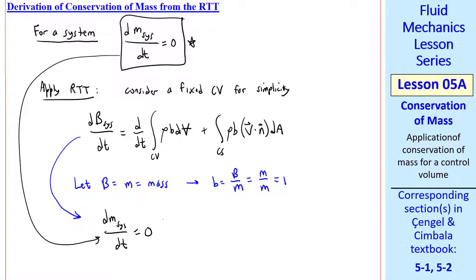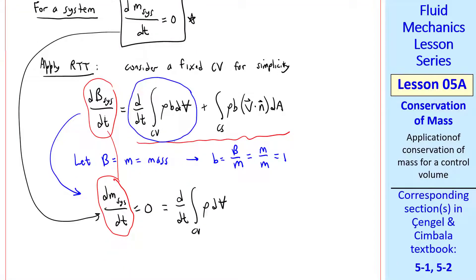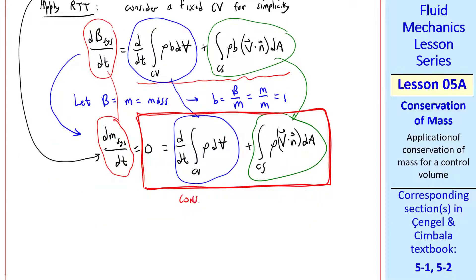First we write the system equation, but since these two are equal when capital B is m, the Reynolds Transport Theorem also applies directly. Setting B equal 1, the control volume term becomes this, and the control surface integral becomes this. All we've done is write the Reynolds Transport Theorem with capital B equal m and little b equal to 1. We've inserted the system equation for conservation of mass.